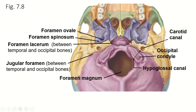Here's the inferior skull. Here is the mandibular fossa. This is the zygomatic process of the temporal bone, and this is the temporal process of the zygomatic bone. This is that mandibular fossa, and this is the styloid process there.